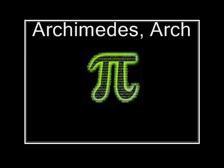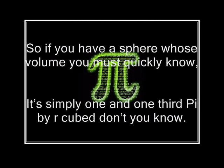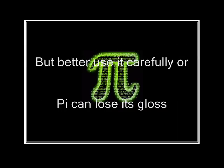Archimedes, Archimedes, Archimedes Pie. Archimedes, Archimedes, Archimedes Pie. So if you have a sphere whose volume you must quickly know, it's simply one and one-third Pi by R cubed, don't you know?